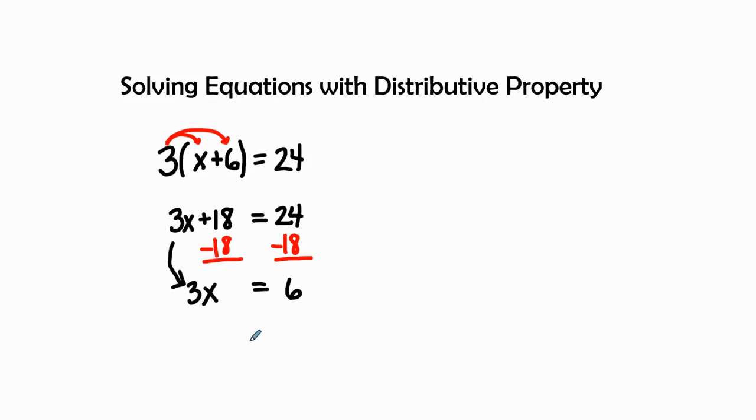Now ultimately our x is still not by itself, and so I ask how is this 3 attached to the x? It's attached through multiplication, and the inverse operation of multiplication is division. So I'm going to divide by my coefficient - the coefficient is the number in front of the variable - I'm going to divide by 3, and I'm going to do that to both sides as well. 3 divided by 3 is 1, giving me 1x equals 6 divided by 3 is 2.